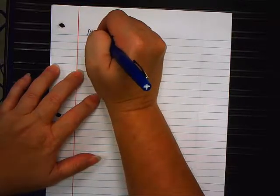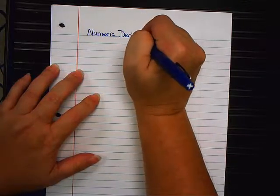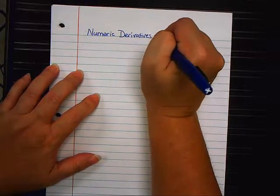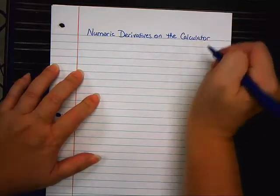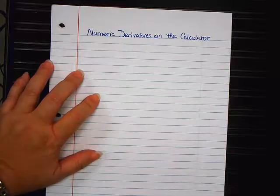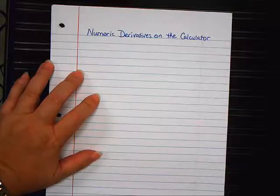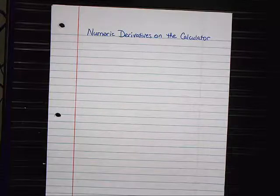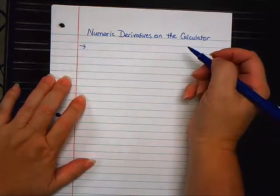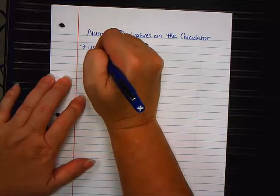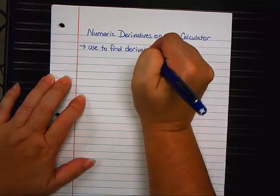We're going to start by talking about how to do what are called numeric derivatives on the calculator. Yesterday, the homework that I gave you asked you to take the derivative using product or quotient rule and then check it with a calculator. Well, you need to know how to check it with a calculator.